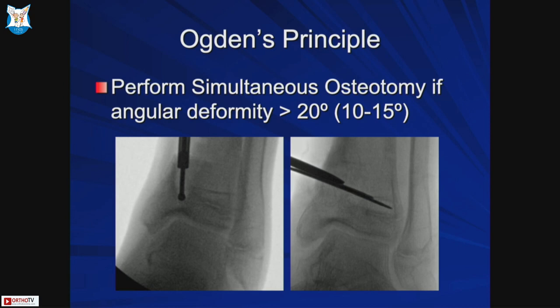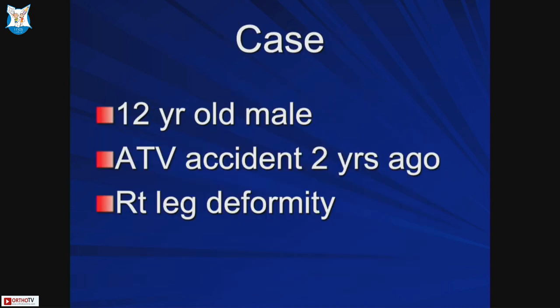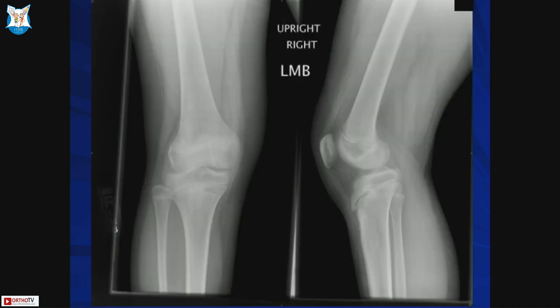Simultaneous osteotomy is performed if angular deformity is more than 20 degrees, though this depends on the region. For significant ankle varus of more than 10 degrees, osteotomy may be warranted. Different approaches include entering the bar from the top, or performing an osteotomy and then resecting the bar from the osteotomy site.